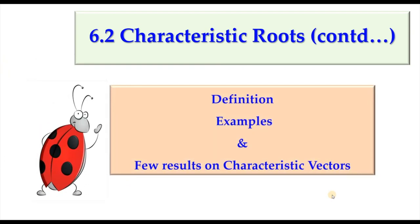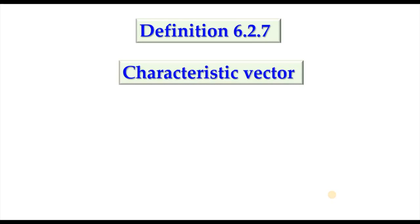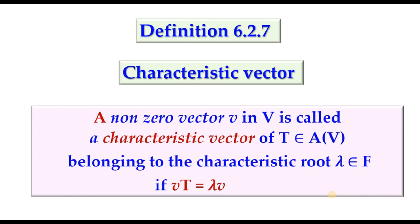In this video we are going to have the definition, examples, and a few results on characteristic vectors. Definition 6.2.7: A nonzero vector v in V is called a characteristic vector of T, a linear transformation, belonging to the characteristic root lambda in F, if the image of v under T is lambda times v.